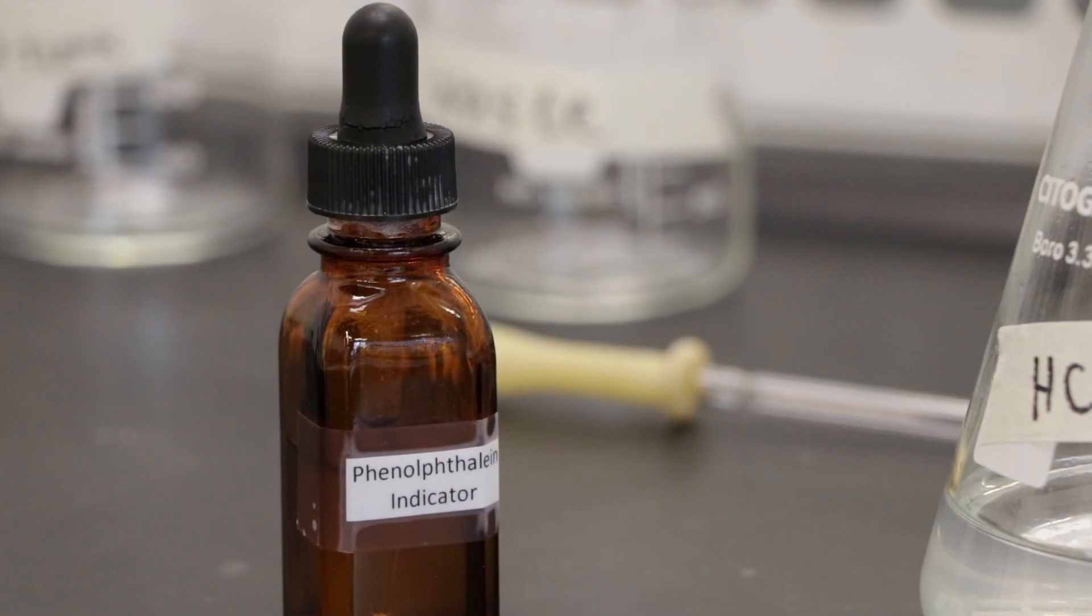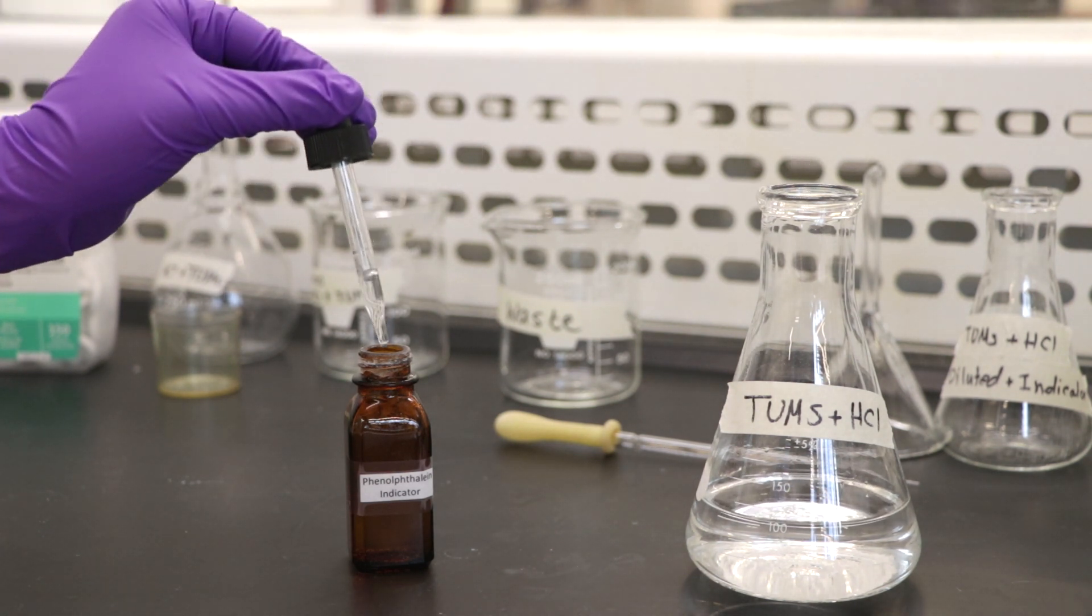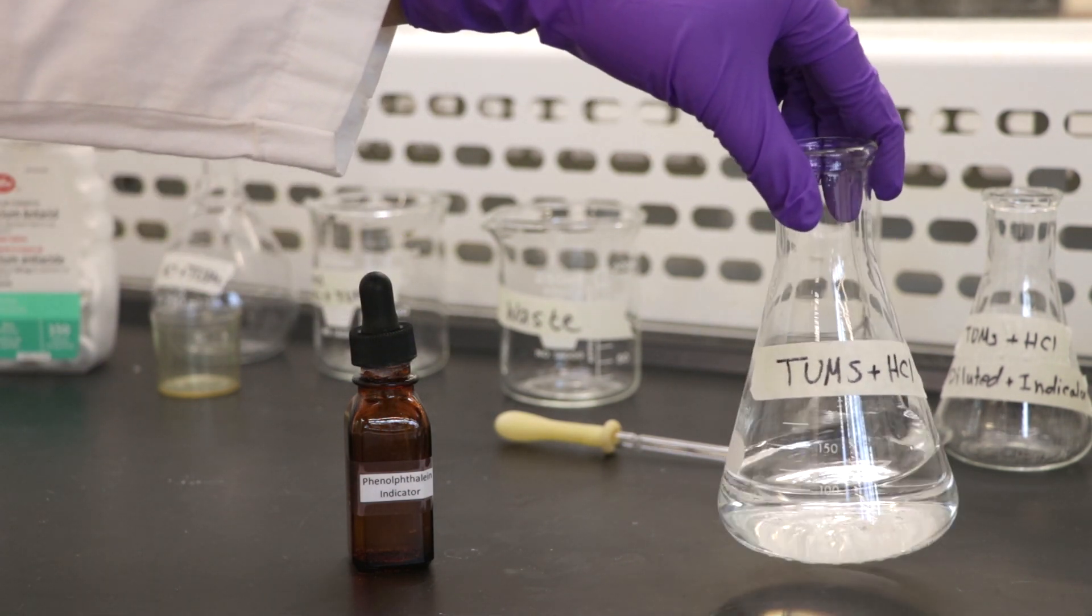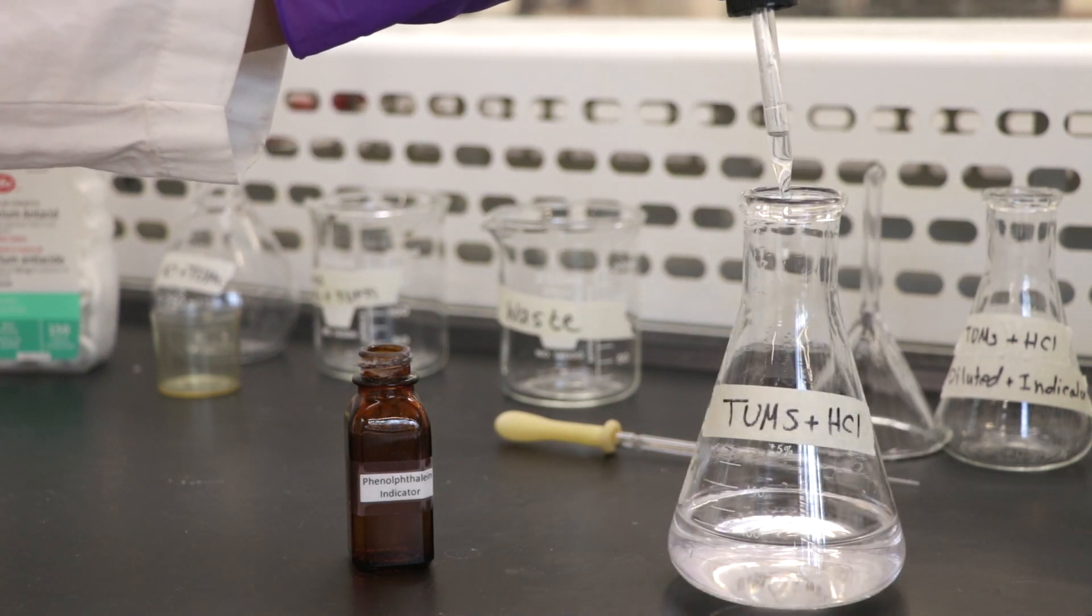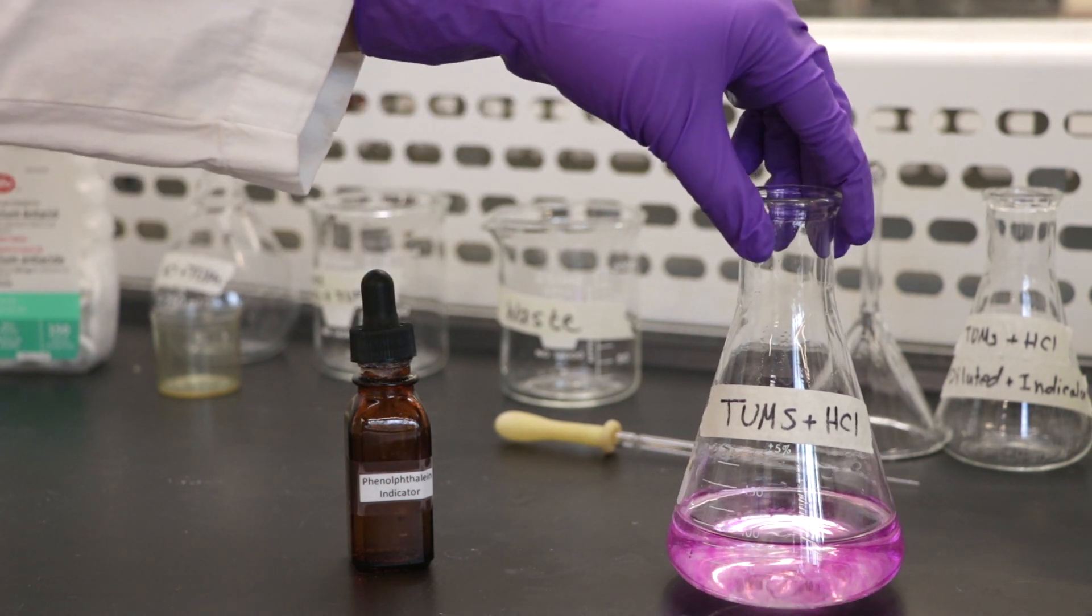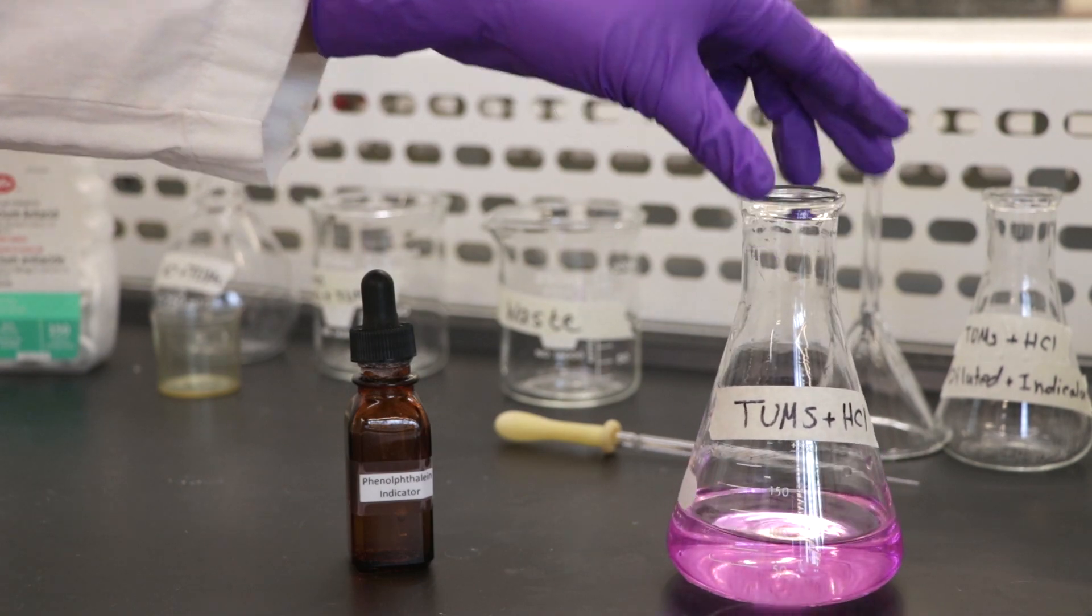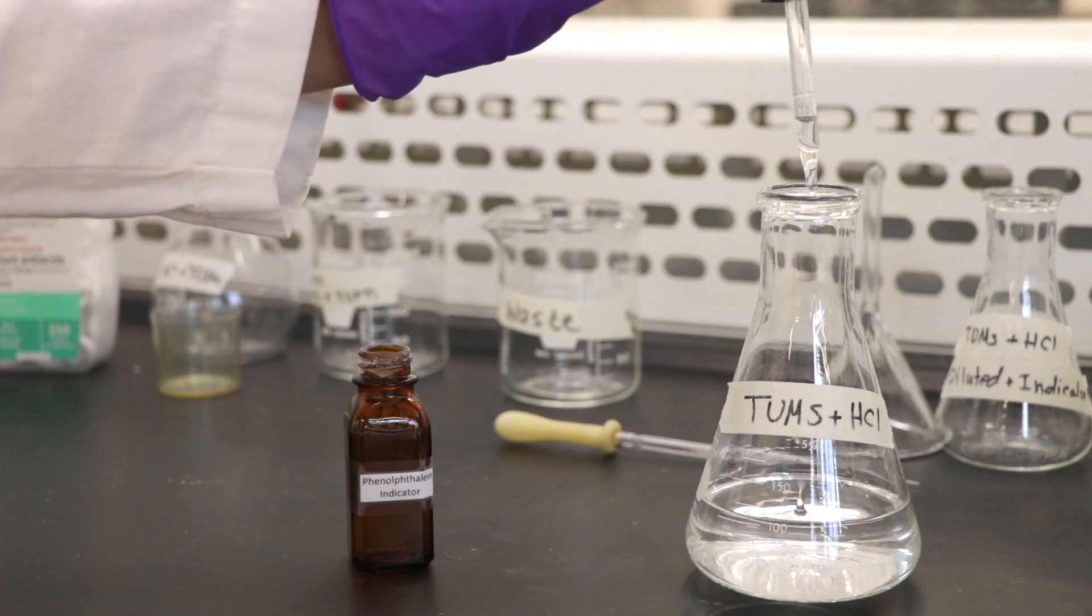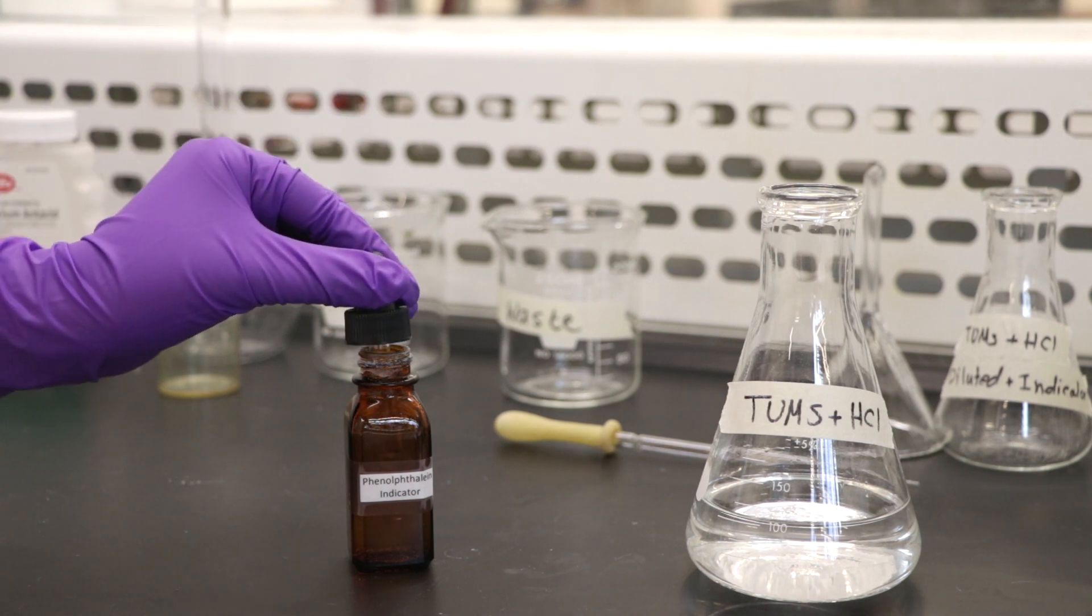Add three to four drops of phenolphthalein indicator. If the solution stays clear, then proceed with the next step of the experiment. However, if the solution turns pink, then add 25 milliliters of stock HCl and swirl. Make sure you record how much HCl you have added. Place it on the hot plate again and bring it to a boil. Add three to four drops of the indicator. If the solution stays white, then proceed to the next step. If the solution turns pink, then repeat this process again.